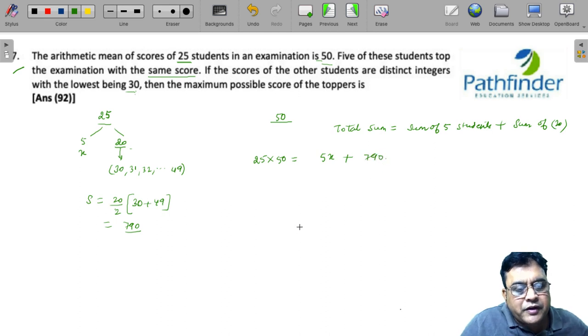So 1250 is equal to 5x plus 790, or 5x must be equal to 460, which means x must be 92. So the average score of toppers is 92.